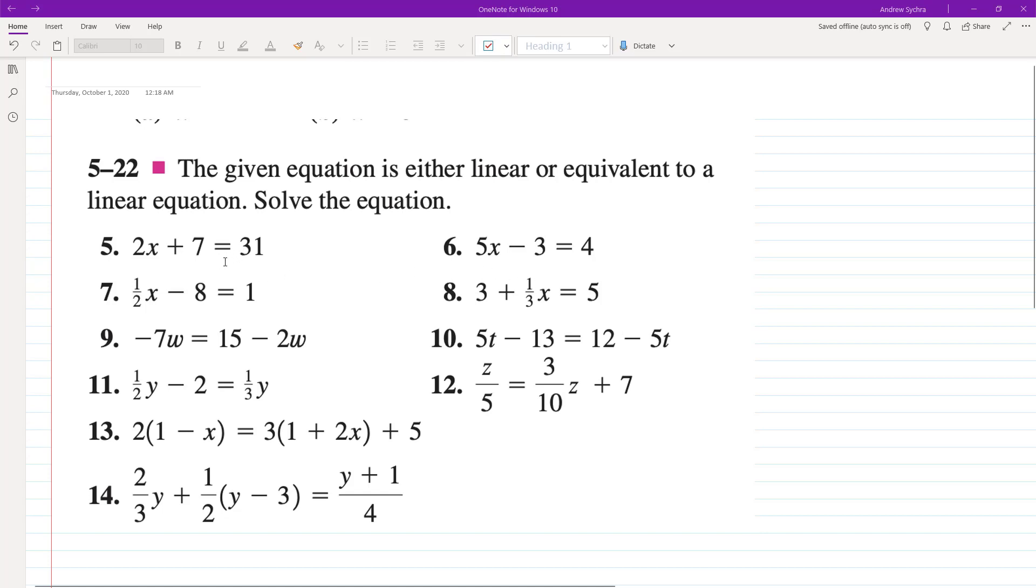So we just subtract 7 first. So if we subtract 7, we have 2x is equal to 26. No, that's going to be 24. Divided by 2, x is equal to 13.